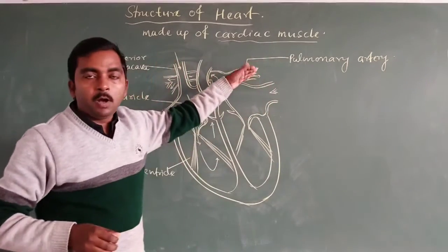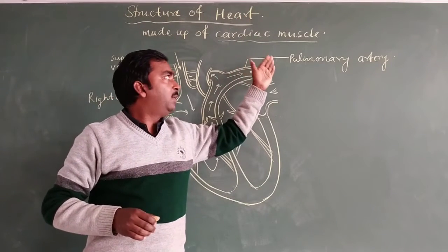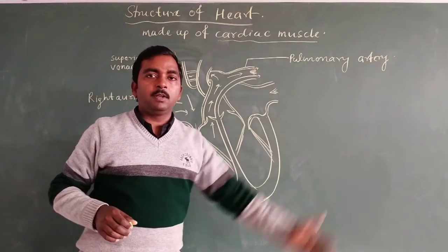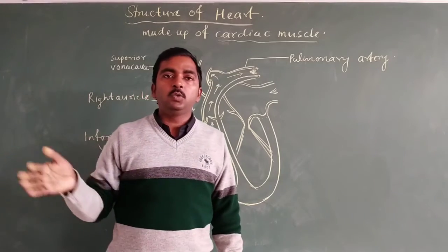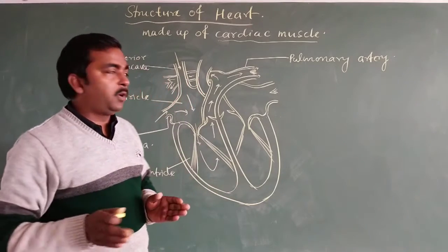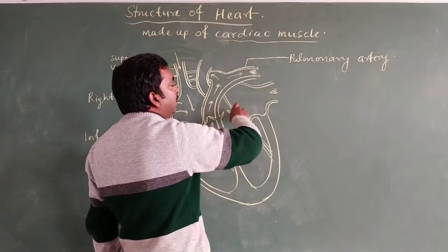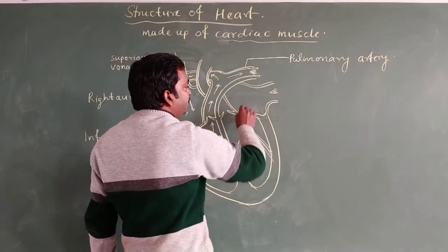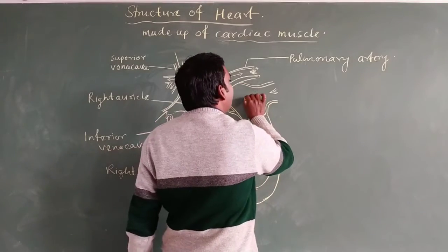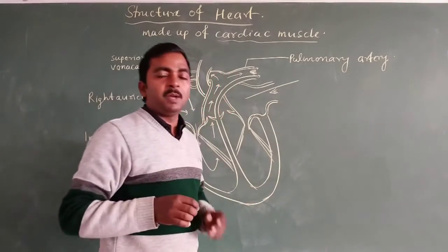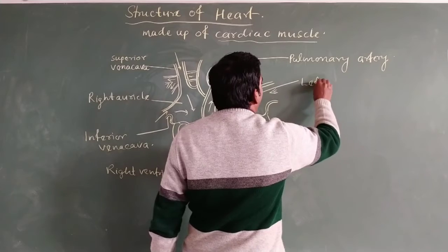From here, one branch of the pulmonary artery carries blood to the left lung, while the other pulmonary artery transfers blood to the right lung for the process of oxygenation. After oxygenation, the blood is received by the left side of the heart. The left upper chamber, which receives oxygenated blood, is known as the left atrium.